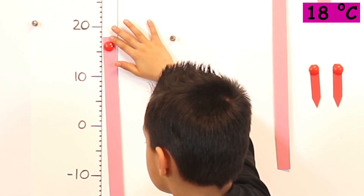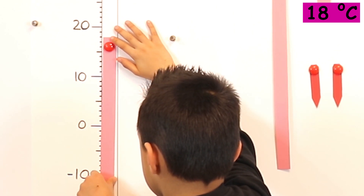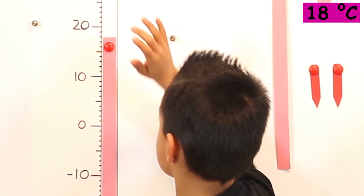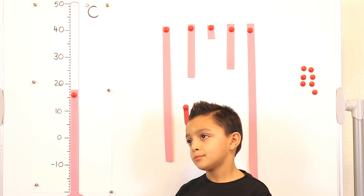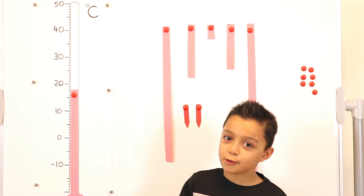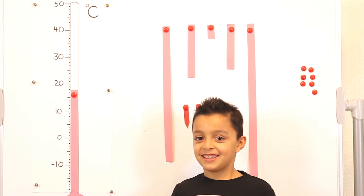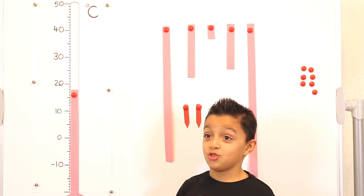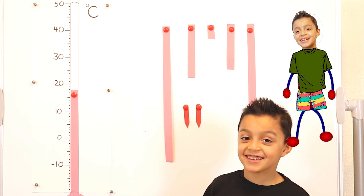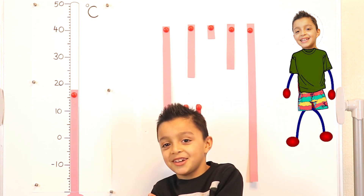So straighten it and let's have a look at the eighteen. Eighteen what? Degrees Celsius. What would you do when it's eighteen degrees Celsius? Can you describe what the weather would be like? Not too hot, not too cold, a little bit windy probably. What would you wear if you went outside? Me personally, I would wear a t-shirt and shorts.